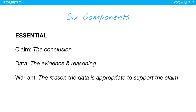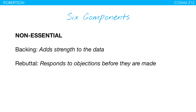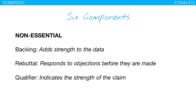With our non-essential components: backing adds strength to the data — maybe something about the source or additional data from multiple viewpoints — anything that makes the data stronger. The rebuttal responds to objections before they're made; if you know people will have concerns, the rebuttal brings those up in the argument to ward off potential attacks. And the qualifier indicates the strength of the claim — usually just a couple of words in the claim itself — indicating how strongly committed the advocate is to the claim.